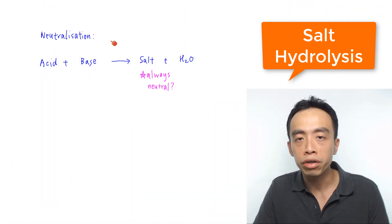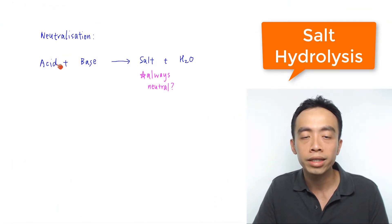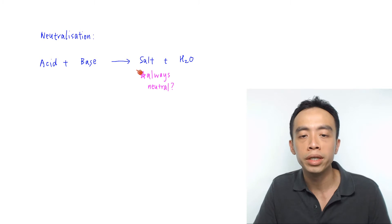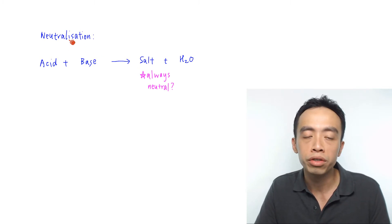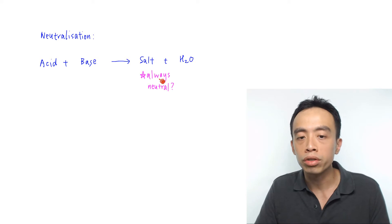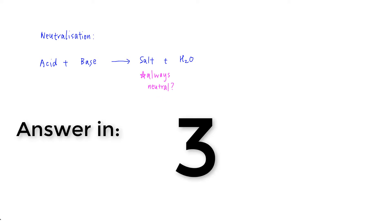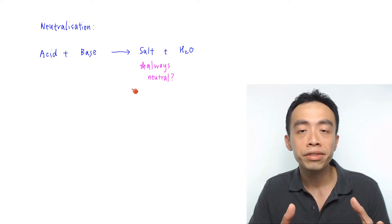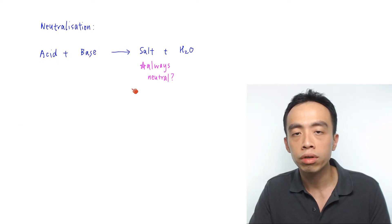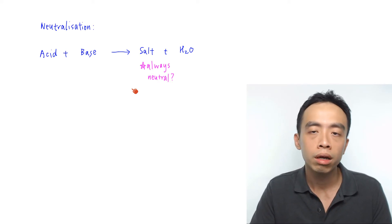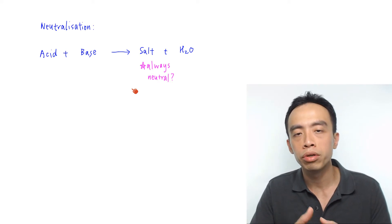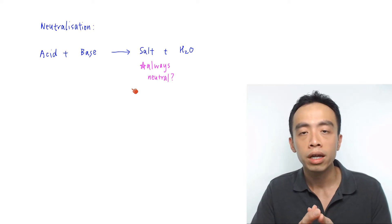Now if I consider a neutralization reaction where my acid and base will react to give me salt and water, and since this process is called neutralization, does it mean that my salt is always neutral? If you think that since this is a neutralization reaction, the product has to be neutral — actually this is a misconception. The nature of the salt can be acidic, neutral, or alkaline; it actually depends on the nature of the acid and base that forms the salt.